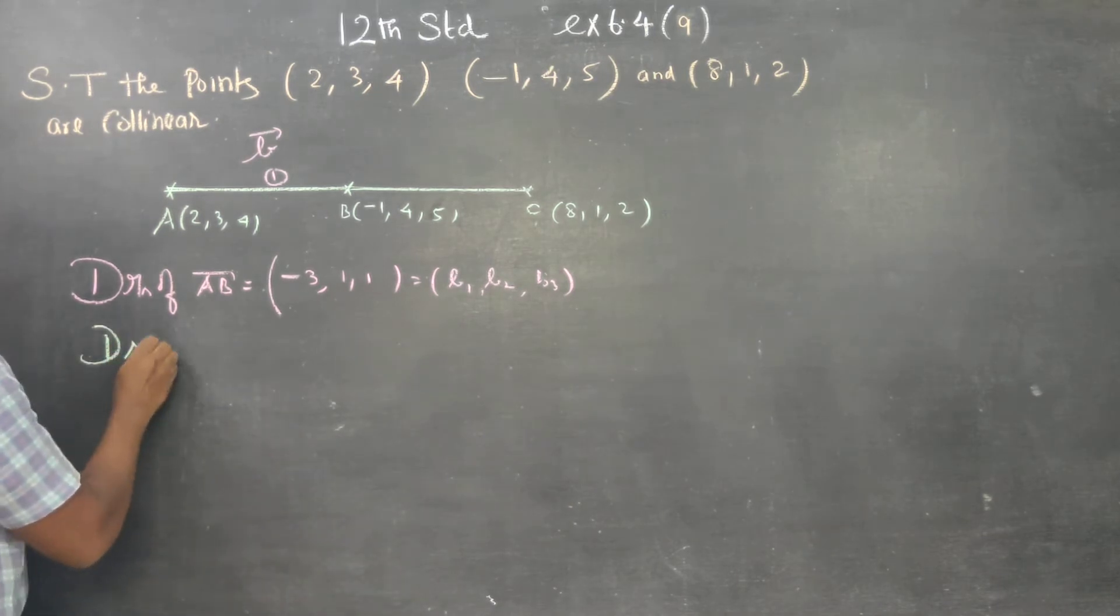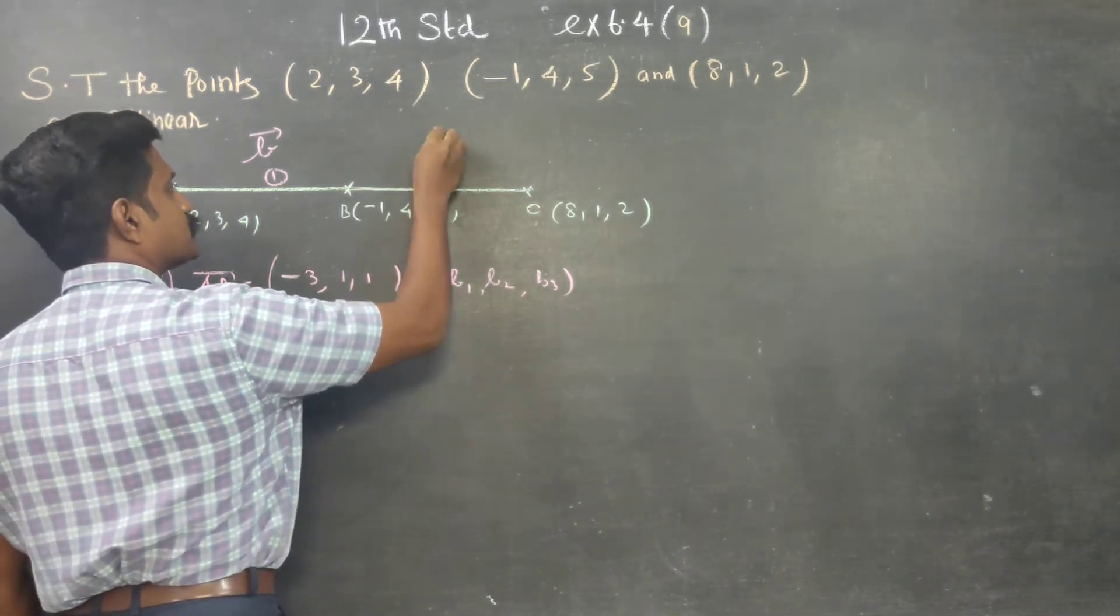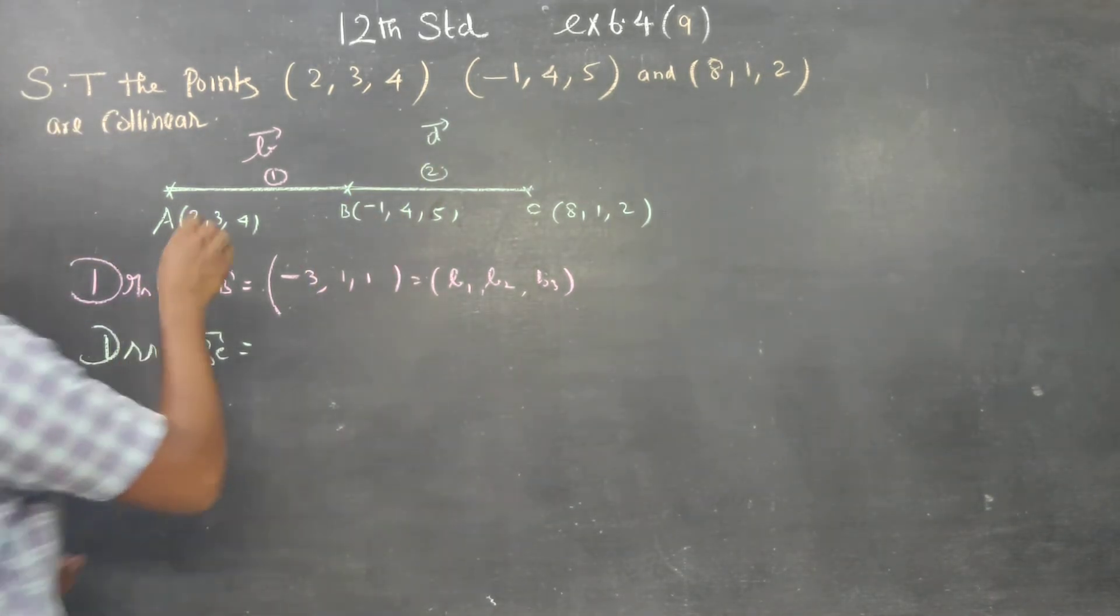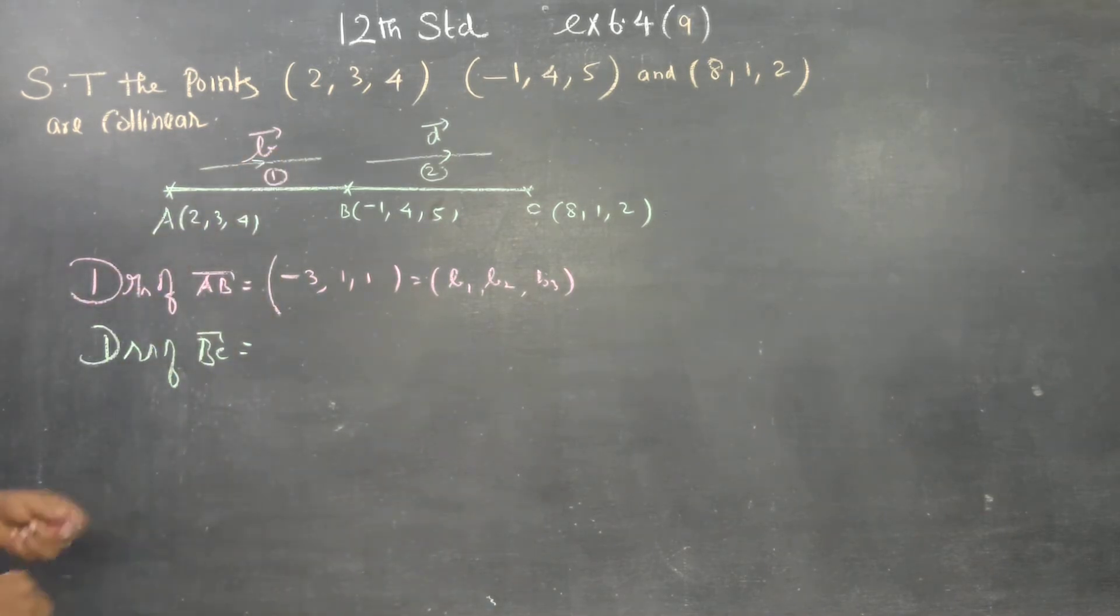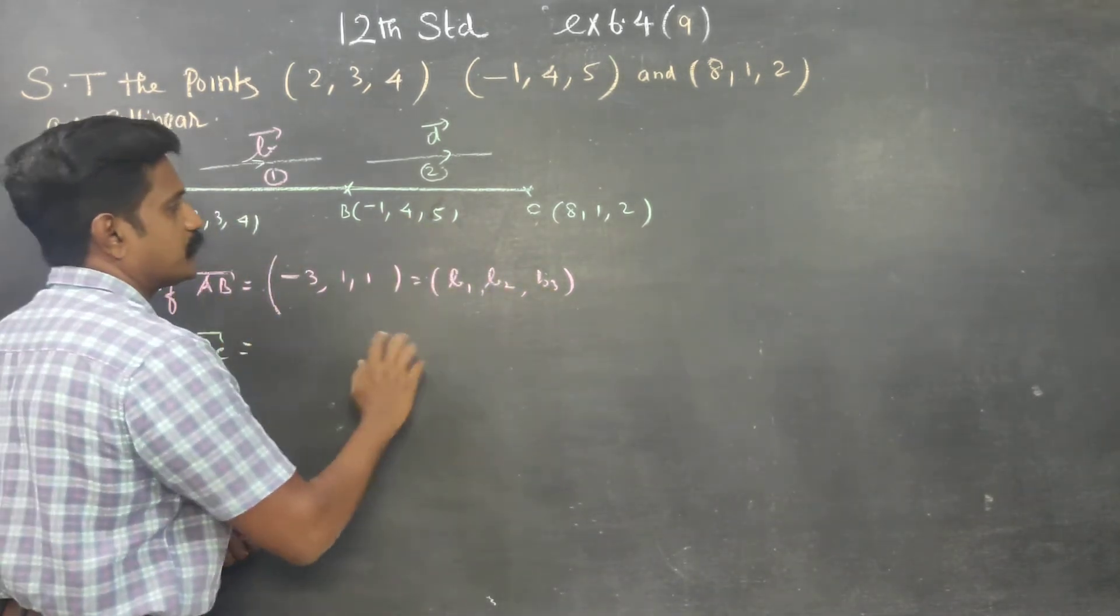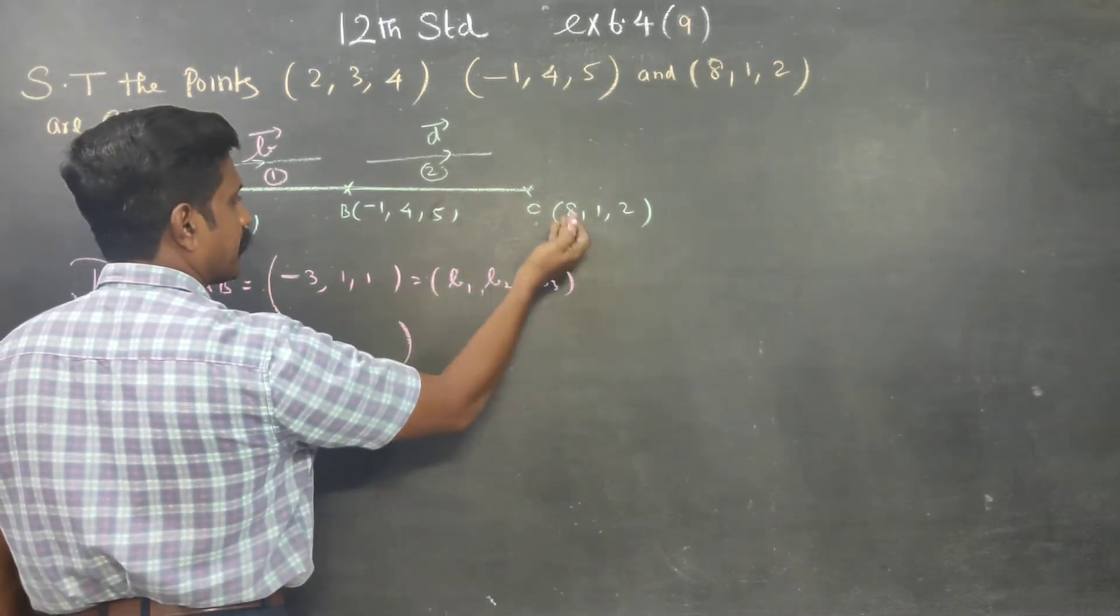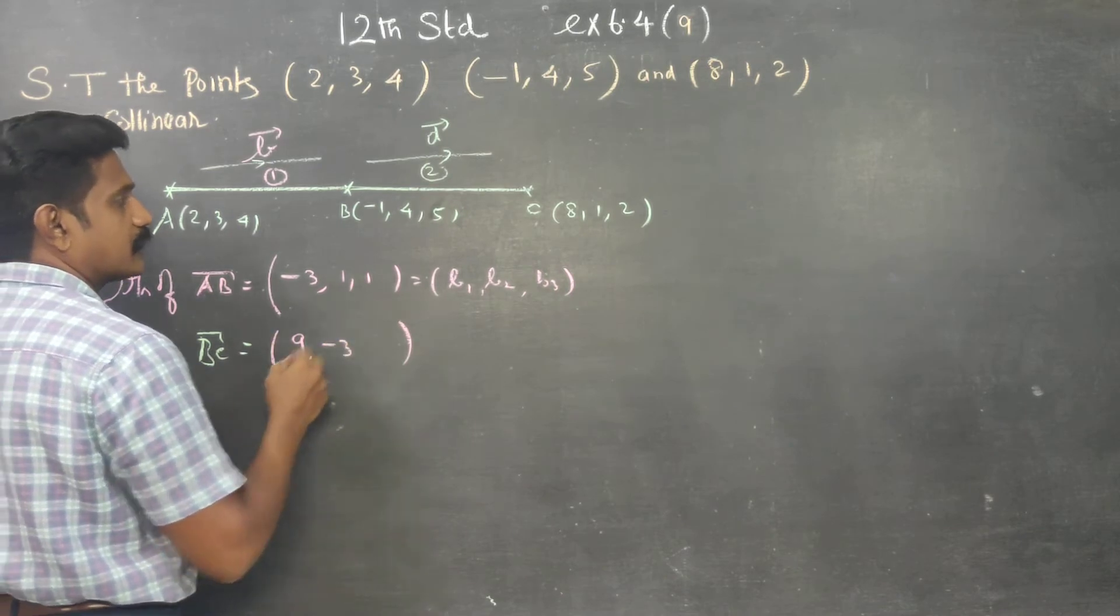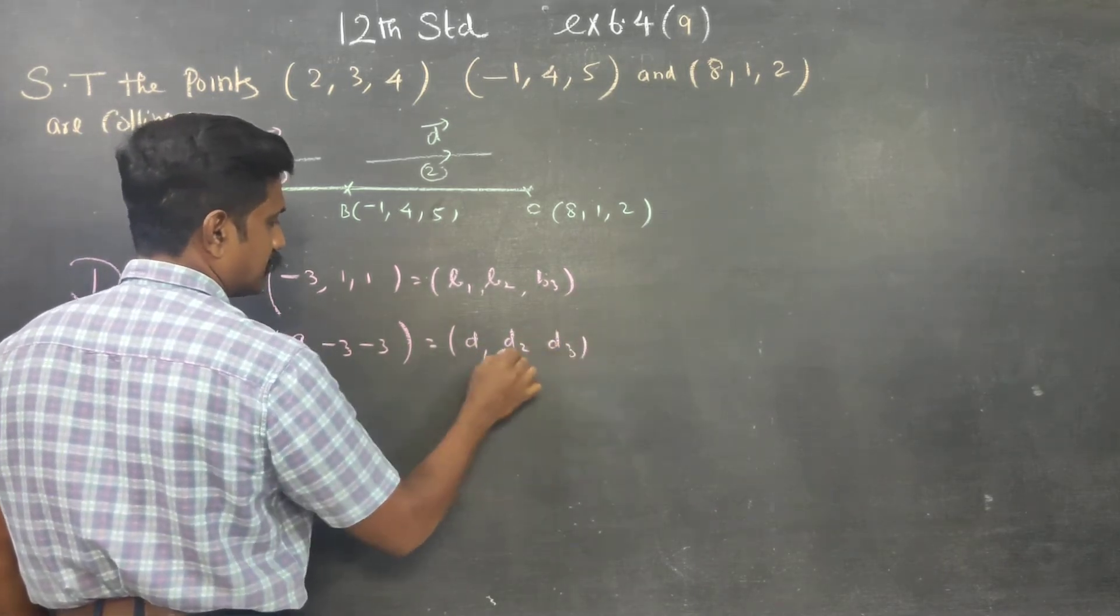Then, finding direction ratios of BC vector. I am going to take this direction ratio as D vector. Direction ratios of BC vector - this is not the BC vector, it is the direction ratios. The direction ratios are just the difference of the two points. 8 minus minus 1 is 9, 1 minus 4 is minus 3, 2 minus 5 is minus 3. Let it be D1, D2, and D3. These are the direction ratios.